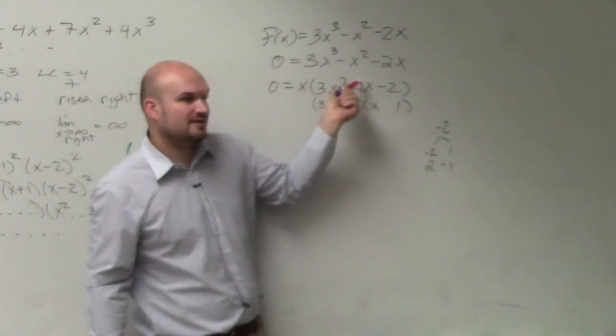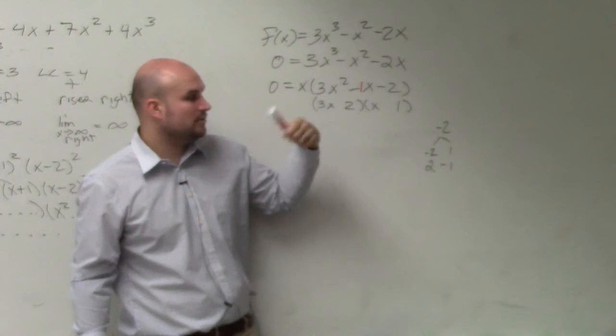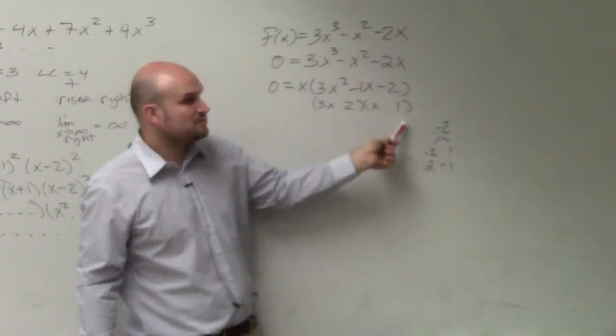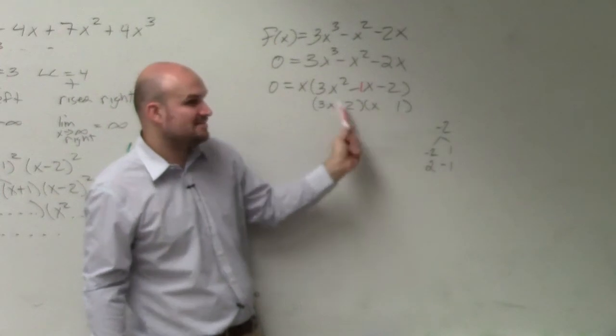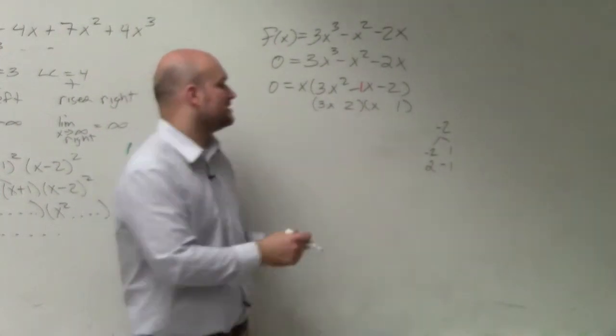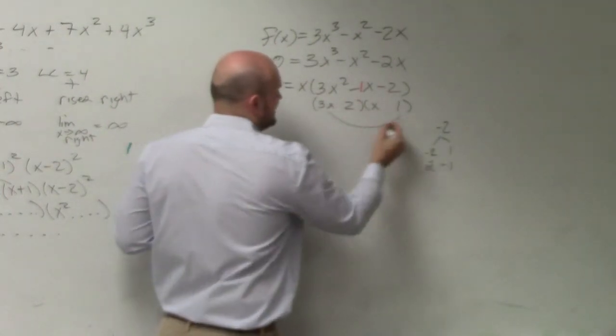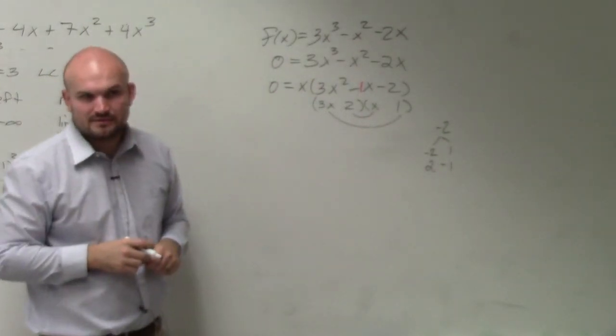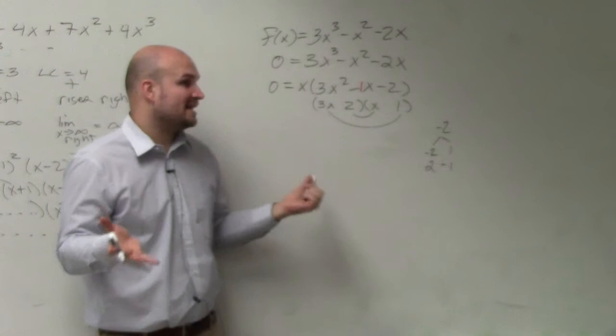Now, this middle term is negative. That means the larger of these two—3x times x is 3x squared, 2 times 1 is negative 2—that means one of these has to be negative. Then we find our middle terms by multiplying these two and these two. I need to get negative 1x.